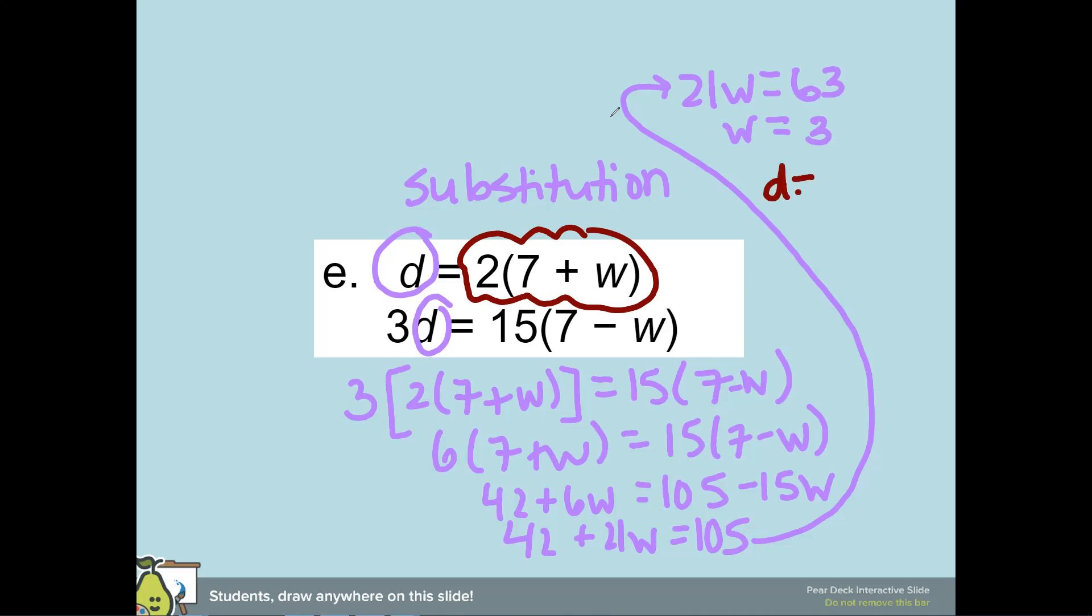So d is going to be 20. D is going to equal two times seven plus three, which is 10, so d is going to equal two times 10 or 20.